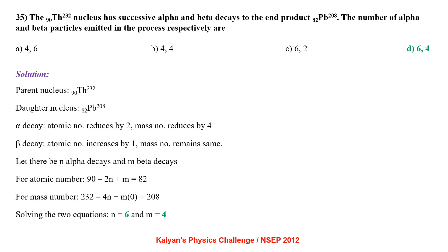The thorium-90-232 nucleus undergoes successive alpha and beta decays to end product lead-82-208. In alpha decay, atomic number reduces by 2 and mass number by 4. In beta decay, atomic number increases by 1 and mass number is unchanged. Let N alpha decays and M beta decays. For mass number: 232 − 4N = 208. For atomic number: 90 − 2N + M = 82. Solving: N = 6 and M = 4.